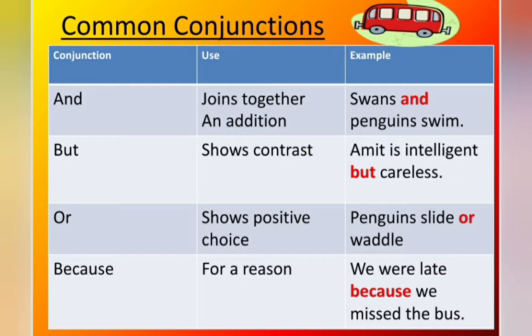Let us see some common conjunctions. First is 'and' — it is used to join together, or it is used as an addition. For example, swans and penguins swim. The second conjunction is 'but' — it shows contrast. For example, Amit is intelligent but careless. The third one is 'or' — it shows a positive choice. For example, penguins slide or waddle. The fourth one is 'because' — it is used for a reason. For example, we were late because we missed the bus.